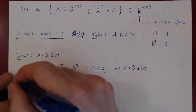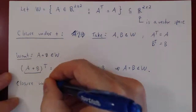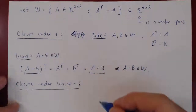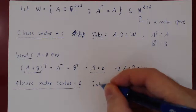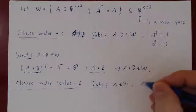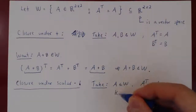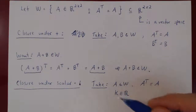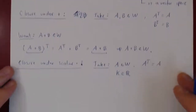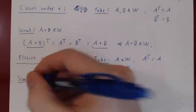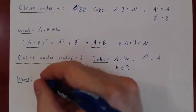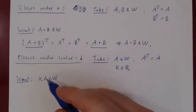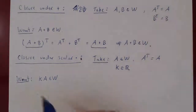Let's check the second axiom: closure under scalar multiplication. We take an element A in W, so A transpose equals A, and we take an arbitrary real number K. We have to prove that the matrix KA is still an element of the space W. If A is a 2 by 2 matrix and you multiply by K, it is still a 2 by 2 matrix. All we have to show is that KA is also symmetric.